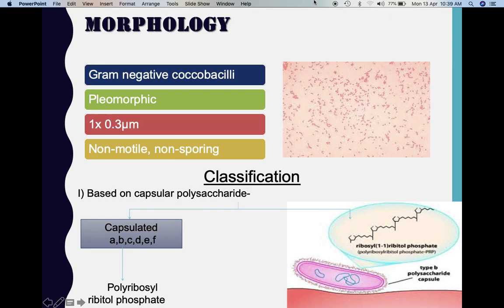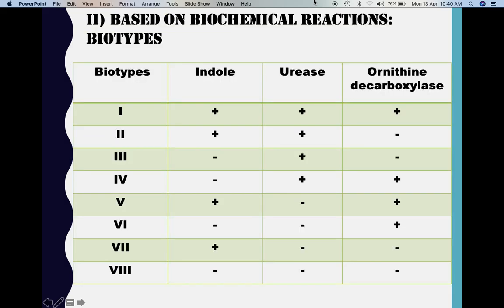Type B is a protective antigen, meaning it has the ability to stimulate the production of antibodies against it. Type B is also known to cause the invasive kind of Haemophilus influenzae infections, and because it is a protective antigen, it has been incorporated into the Haemophilus influenzae type B vaccine. We can also classify Haemophilus influenzae based on biochemical reactions into eight biotypes, depending on whether they give a positive or negative reaction for indole, and whether they possess the enzymes urease and ornithine decarboxylase.